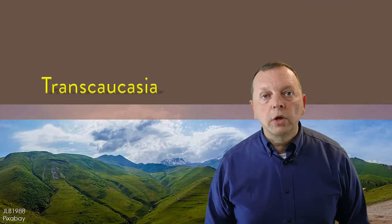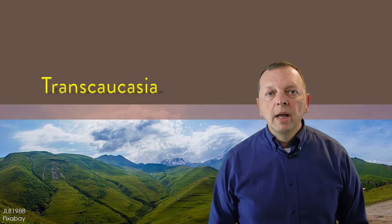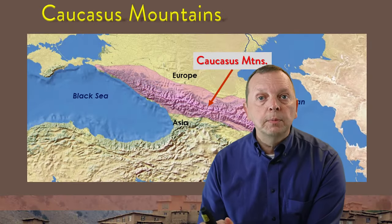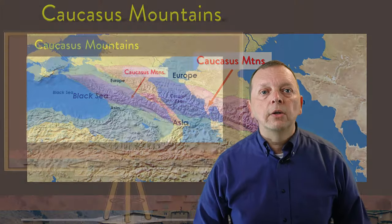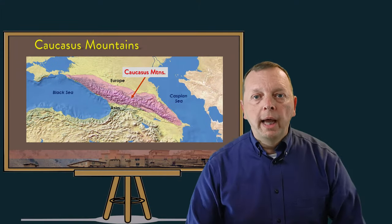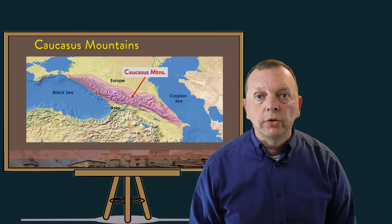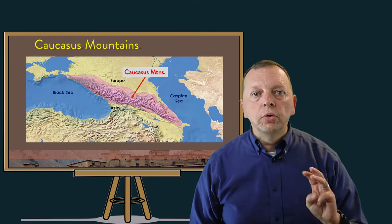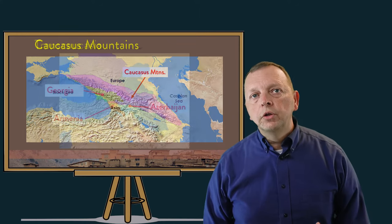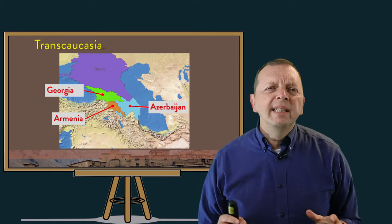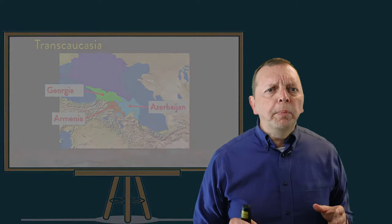The second region of the former republics is Transcaucasia. Spanning the distance between the Black Sea to the west and the Caspian Sea to the east, the Caucasus Mountains divide Europe from Asia. The name Transcaucasia literally means 'Asia across the Caucasus Mountains,' and it includes three countries directly south of these mountains: Georgia, Armenia, and Azerbaijan. These countries technically are Asian countries, but politically and culturally they have stronger ties to Europe. In fact, Georgia had even been trying to become a NATO country until the Russian invasion in 2008 ended these prospects.